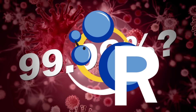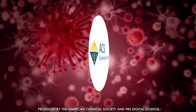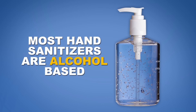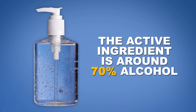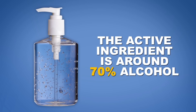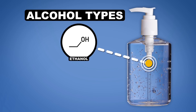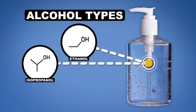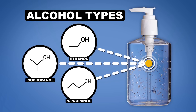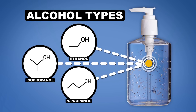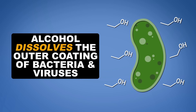Most popular hand sanitizers are alcohol-based. The active ingredient is around 70% alcohol, depending on the formulation. The alcohol can either be ethanol — the same stuff in your booze — isopropanol, the stuff in rubbing alcohol, or n-propanol, rubbing alcohol's chemical sibling. They all pretty much work the same way though.